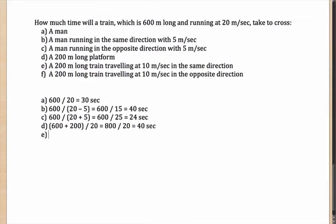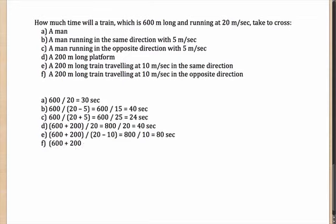Similarly, if crossing a 200-meter long train, the total distance is 600 plus 200 — the length of the first train plus the length of the second. They are moving in the same direction, and the other train is moving at 10 m/s, so the relative speed will be 20 minus 10. This becomes 800 divided by 10, which is 80 seconds.